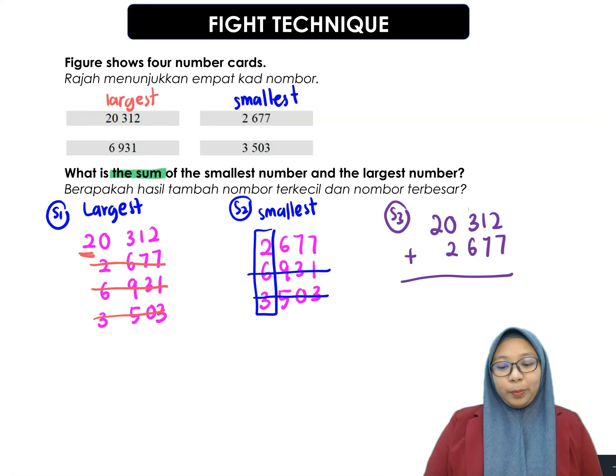So, 2 plus 7, 9, 1 plus 7, 8, 3 plus 6, 9, 0 plus 2, 2, 2 plus 0, you will get 2. So, the final answer will be 22,989.